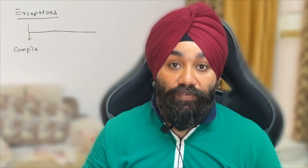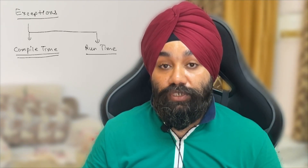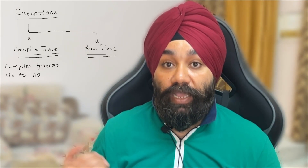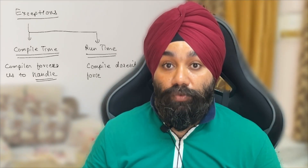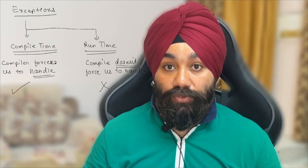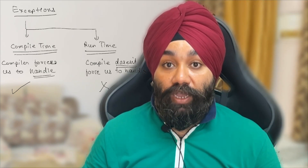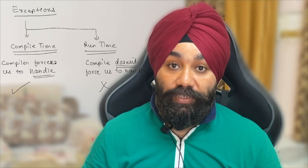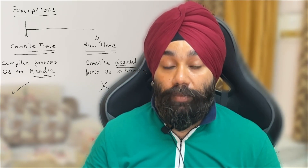What is the difference between these two kinds of exceptions? Compile-time exceptions are those which the compiler forces us to handle or forces us to place a handling mechanism. Runtime exceptions are different — the compiler does not force us to place a handling mechanism or handle those exceptions explicitly.